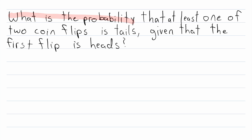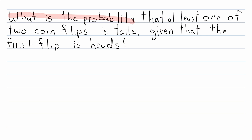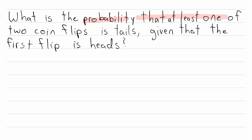What is the probability that at least one of two coin flips is tails, given that the first flip is heads? Here we are asked about the probability of a particular event given a specific condition, and that's why this is an example of a conditional probability.